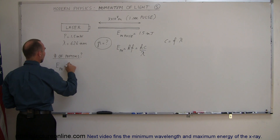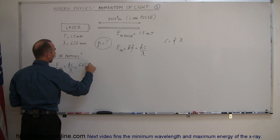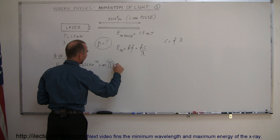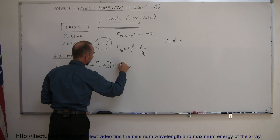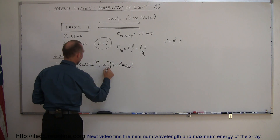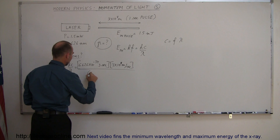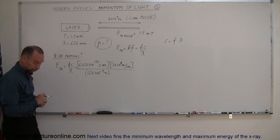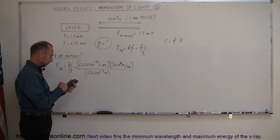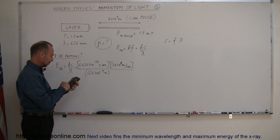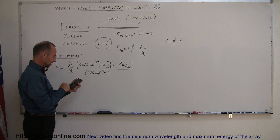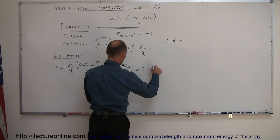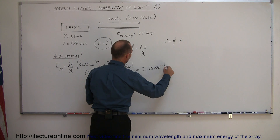The energy of the photon equals hc over lambda, which is 6.626×10⁻³⁴ joule·seconds multiplied by the speed of light 3×10⁸ meters per second, divided by lambda, which is 626×10⁻⁹ meters. Calculating: 6.626e-34 × 3e8 ÷ 626e-9 gives us an energy of 3.175×10⁻¹⁹ joules. That's the energy in a single photon.